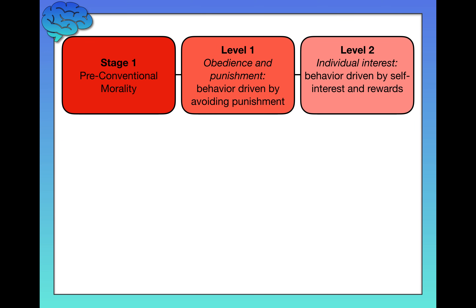Level 2 is called individual interest, because behavior is driven by self-interest and rewards. Someone at this level might say, "Yes, he should steal the drug because he wants to get his wife back — that's in his best interest. It might hurt the druggist, but stealing the drug is most rewarding for him because he will save his wife and that's what he wants."